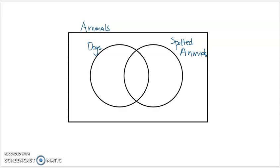For example, we have golden retrievers — a golden retriever is a dog, but it's not a spotted dog. We've got some animals that are spotted but are not dogs, like a jaguar, which would be a spotted animal that's not a dog. But then there are some dogs that are spotted — a dalmatian is an animal that's both a dog and spotted. What's in the middle represents the things that are in both sets.